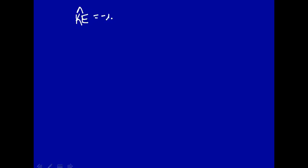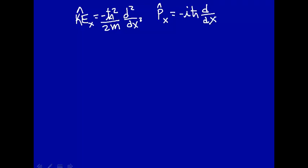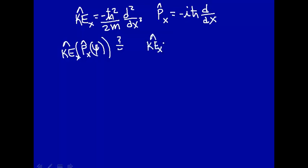The kinetic energy operator is minus h-bar squared over 2m second derivative with respect to x. And the momentum operator — in just one dimension in the x direction — is minus i h-bar first derivative with respect to x. Now let's see if they commute. In other words, let's apply the kinetic energy operator on the result of when we do the momentum operator on a particular function psi, and check if that equals the result from doing the kinetic energy operator first, then the momentum operator.